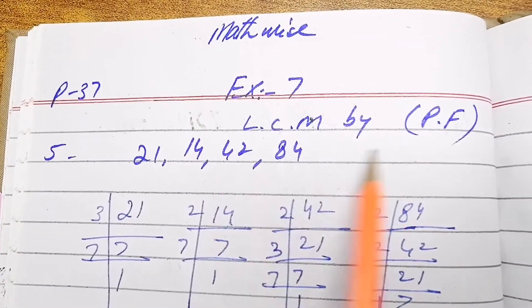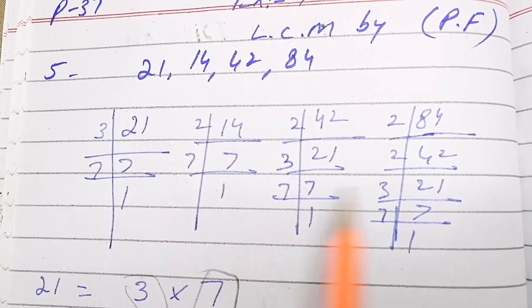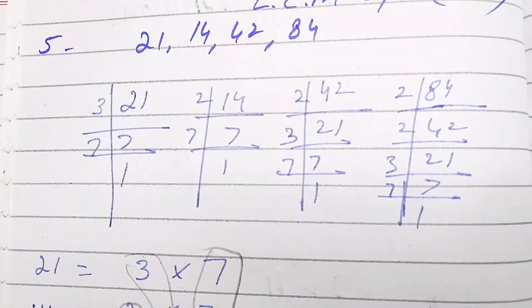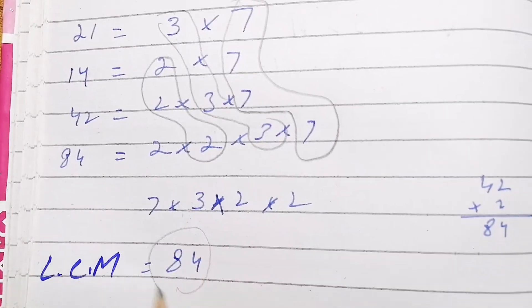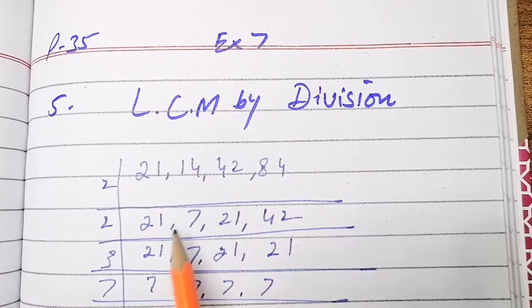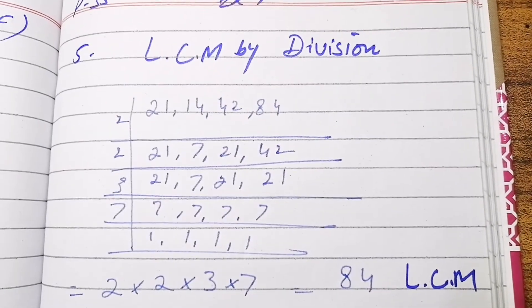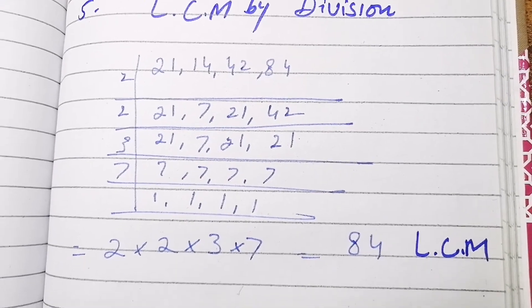For question 5 of Exercise 7, four numbers are given. We divide them, take common factors and non-common factors. LCM by prime factorization method is 84. Solving the same question by division method also gives the answer 84. Both answers are the same, confirming the calculations are correct.